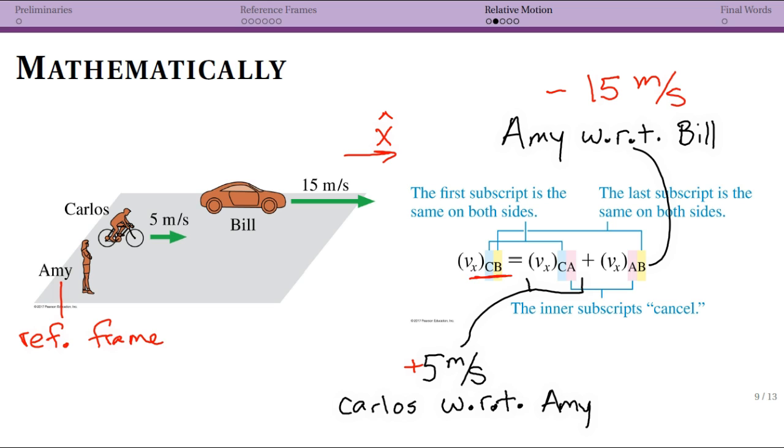So what is this one? This one is then Carlos with respect to Bill. And what the book's annotation of this is pointing out is that for this to work, you're effectively canceling these inner subscripts, right? I have an A on the right here and A on the left there. So it's like these A's are canceling and I'm left with a C on the left, a B on the right. Now this works as long as you always get the order correct to mean this. So we're left with the velocity vector that represents Carlos with respect to Bill.